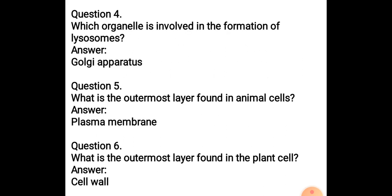Question 4: Which organelle is involved in the formation of lysosomes? The answer is Golgi apparatus. If you recall the function of Golgi apparatus, you studied that they help in the formation of lysosomes. Question 5: What is the outermost layer found in animal cells? The outermost layer in animal cells is plasma membrane because cell wall is absent. Cell wall is found only in plant cells. Question 6: What is the outermost layer found in plant cells? That is the cell wall.